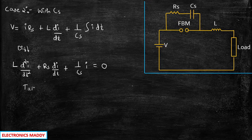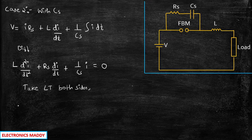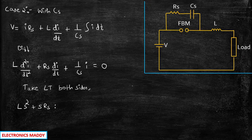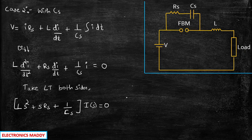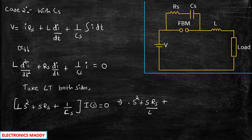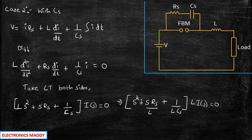Taking the Laplace transform on both sides, we get: L × S² + S × RS + (1/CS) = 0, where D²I/DT² transforms to S² and DI/DT transforms to S. Taking L common throughout, we get S² + S × (RS/L) + (1/(L × CS)) = 0 multiplied by L × I(S) = 0. This expression can be verified by expanding it back to the original differential equation.